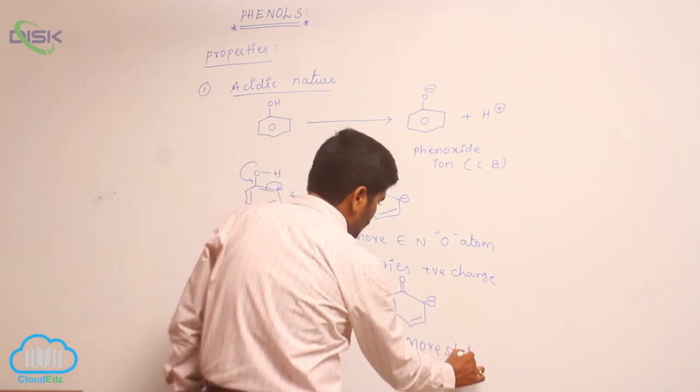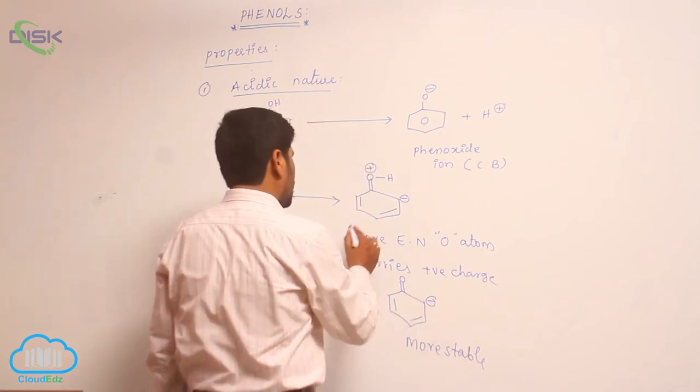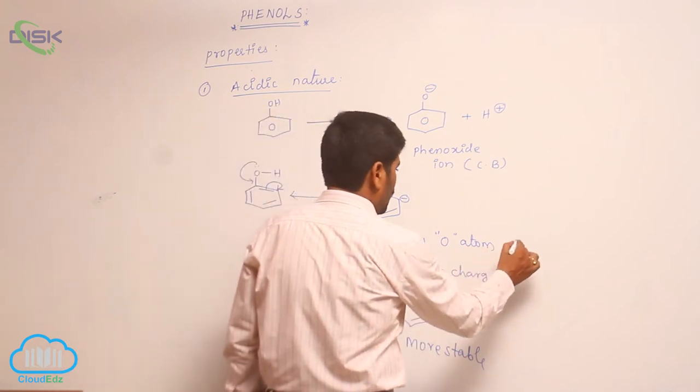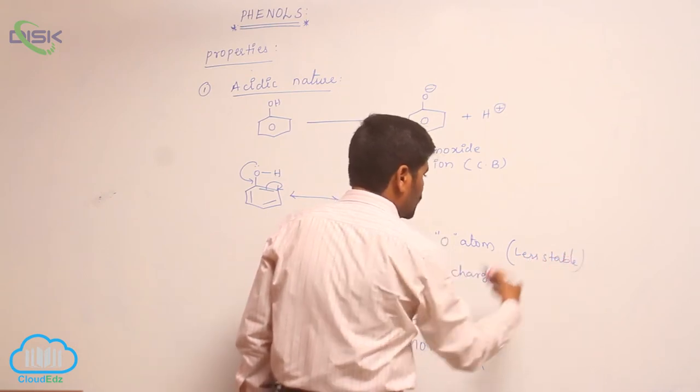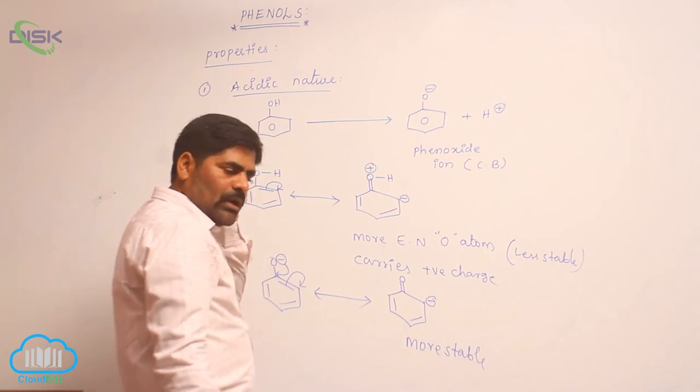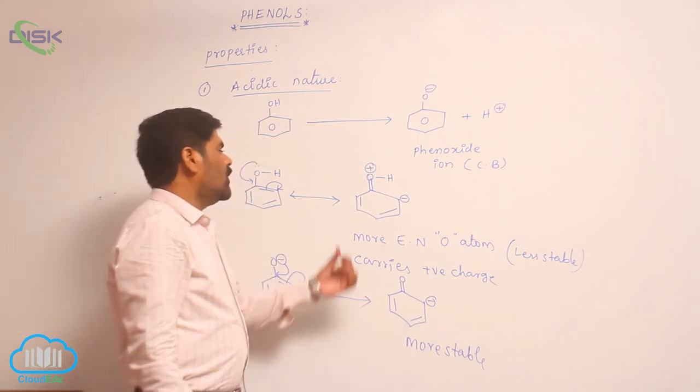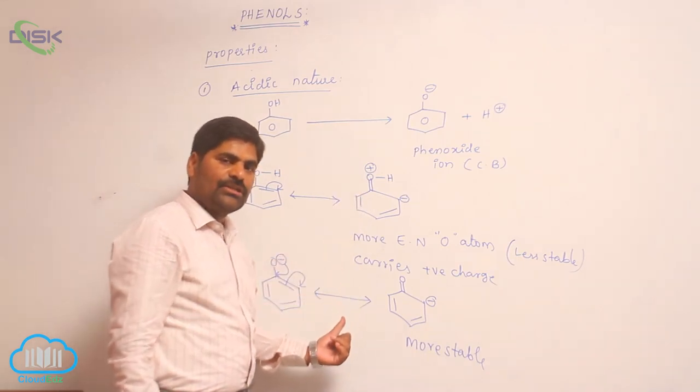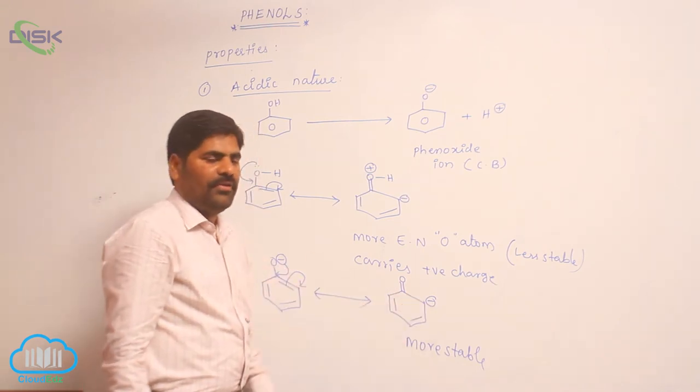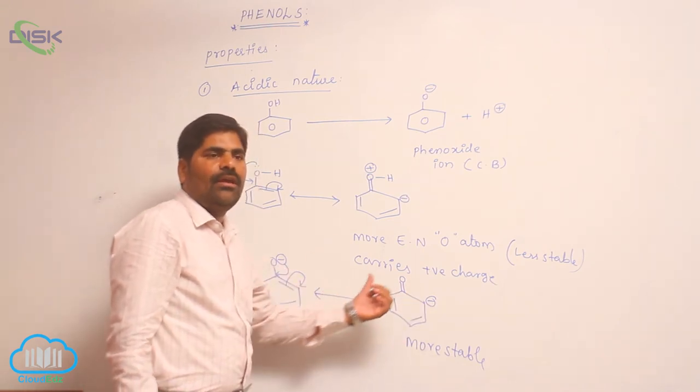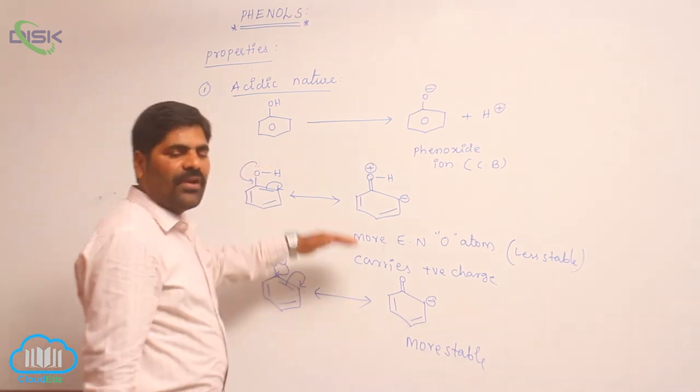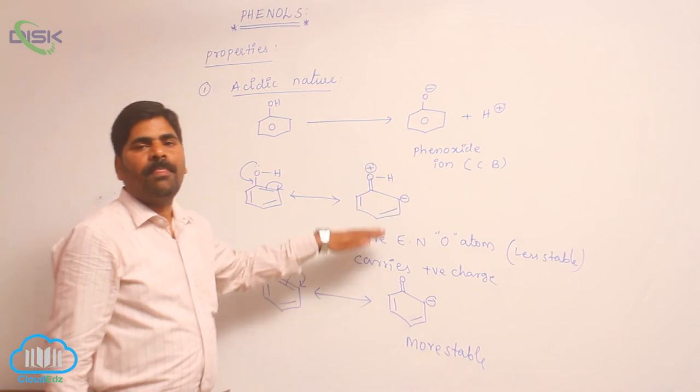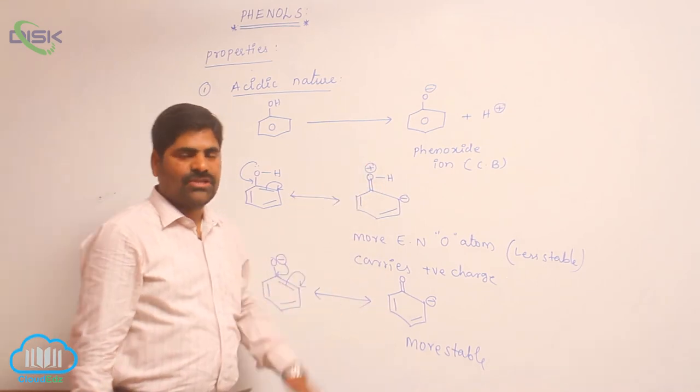It is more stable compared to this one which is less stable. So, therefore, in order to get stability, phenol loses its proton easily to form which one? Phenoxide. So, that is the reason why phenols exhibit acidic character. So, the acidity of phenols is clearly explained on the basis of resonance structures.